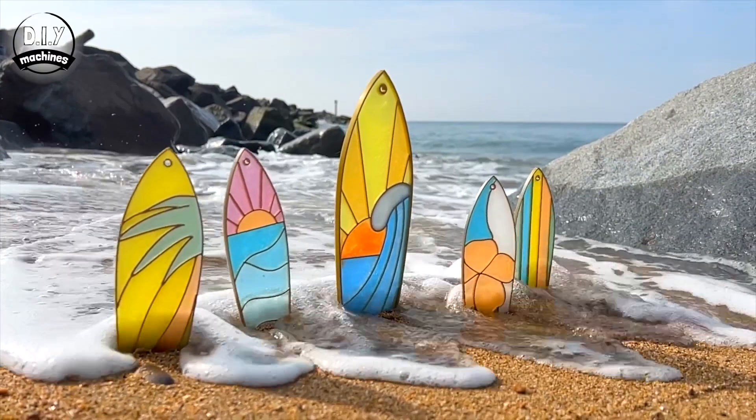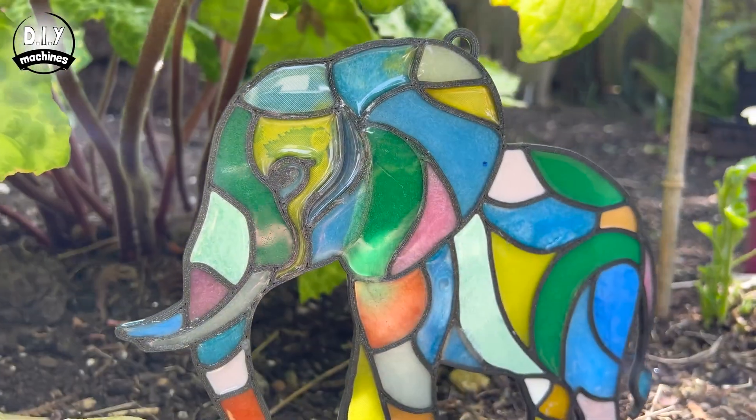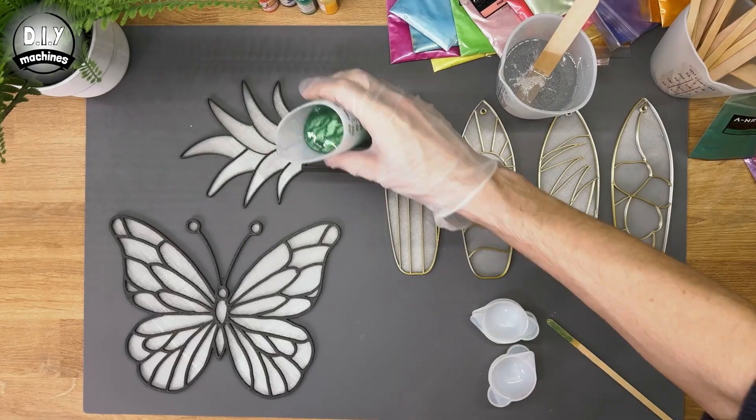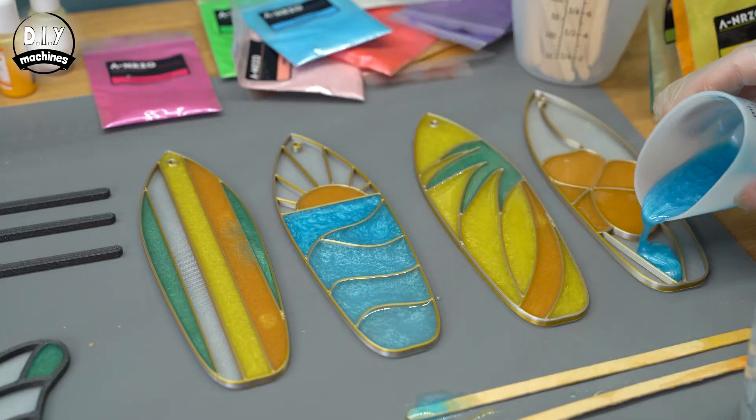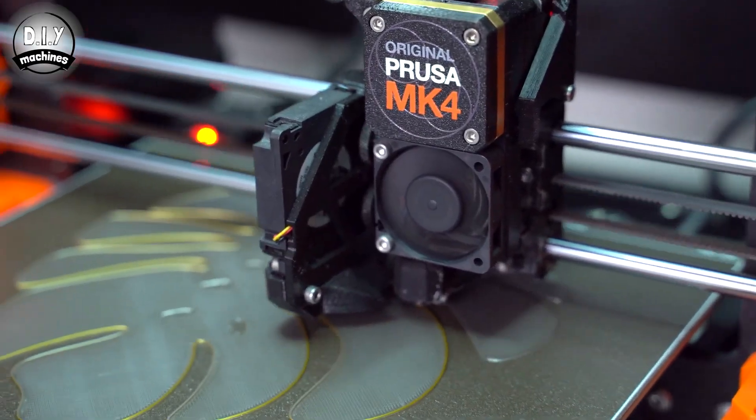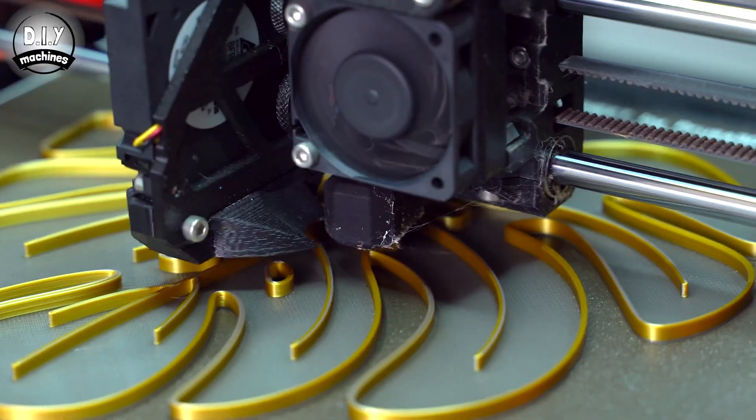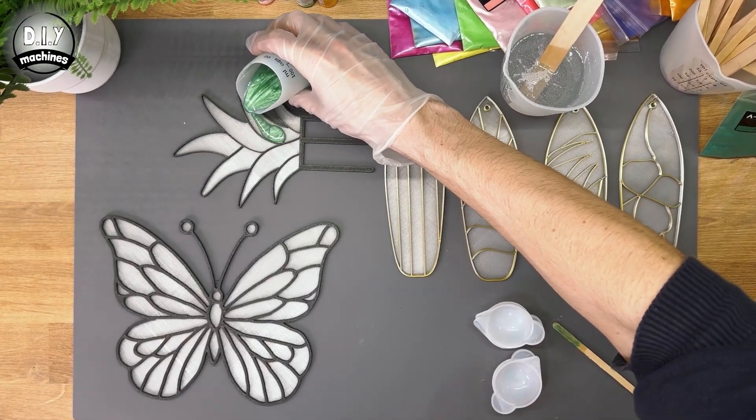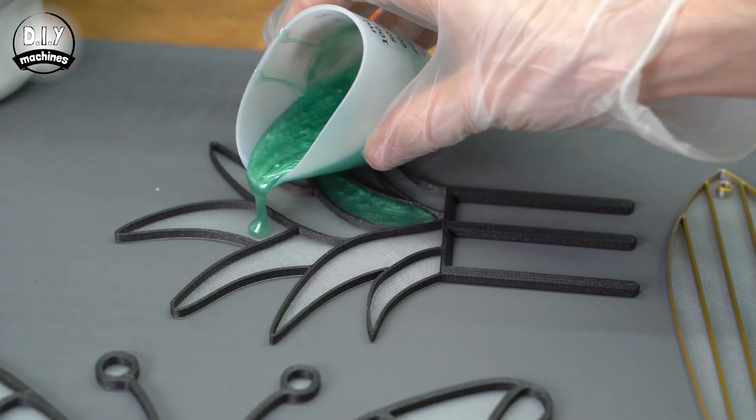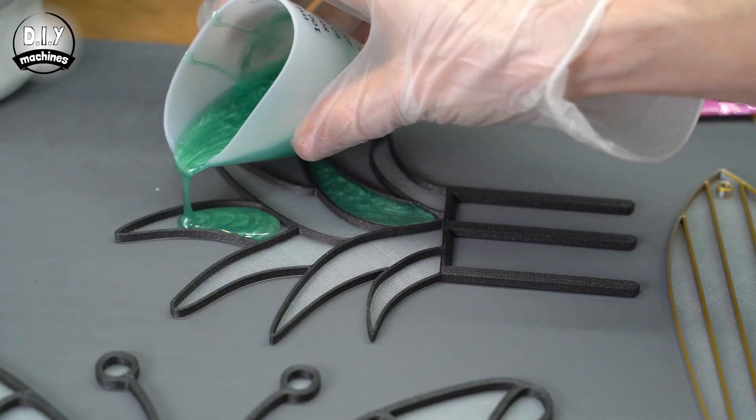Now for some tips and tools. Just one tip caught my eye this week, a technique really. On Instructables, DIY Machines demonstrates a method for recreating the look of stained glass using 3D printed frames filled with metallic resin. Now, at first glance, I know it's a bit more of a craft project than we typically cover on this show, but I think there are some broader applications here.